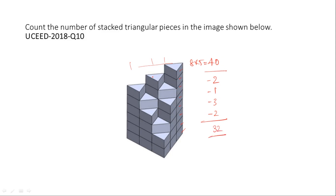32 blocks are in the front. Now for the blocks behind: counting the next blocks — 1, 2; 1, 2, 3, 4, 5; and here 1, 3. So that gives 5 columns, each with 3 rows — 5 × 3 = 15 blocks should be behind.